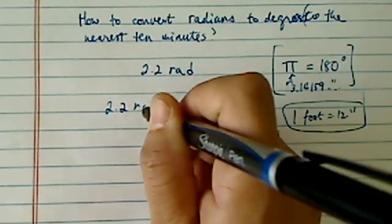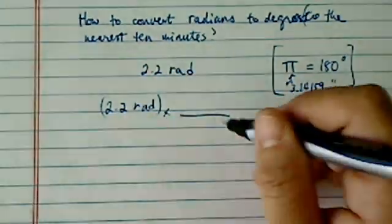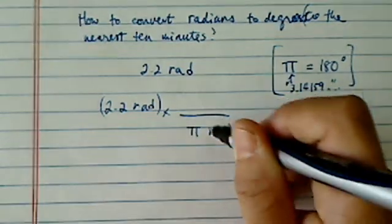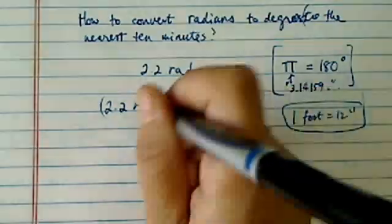So the way you do it is 2.2 radians is what you have, and you put these things that you don't want on the bottom, which is pi radians is equal to 180 degrees. Then the radians cancels out,